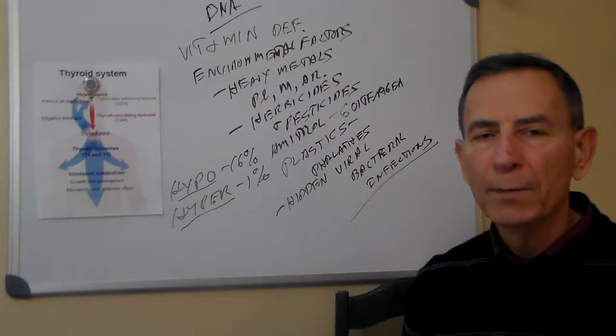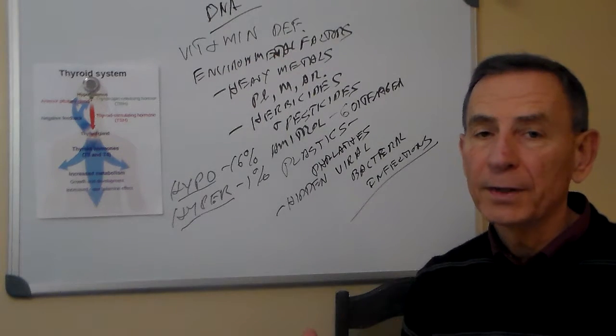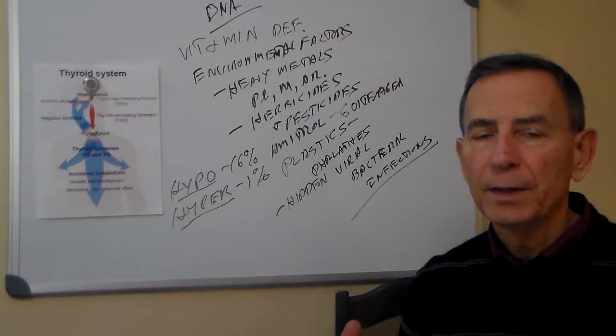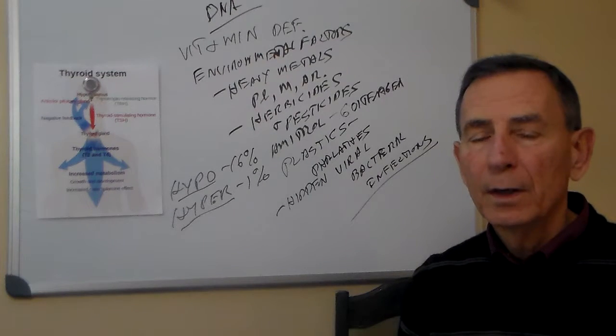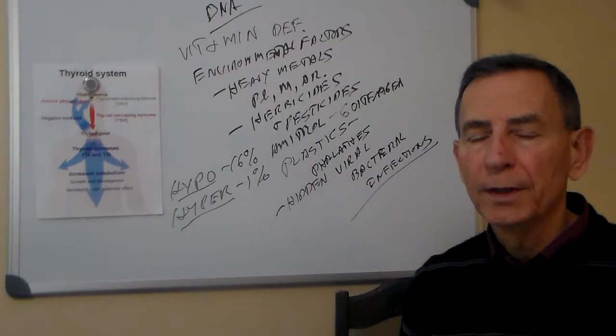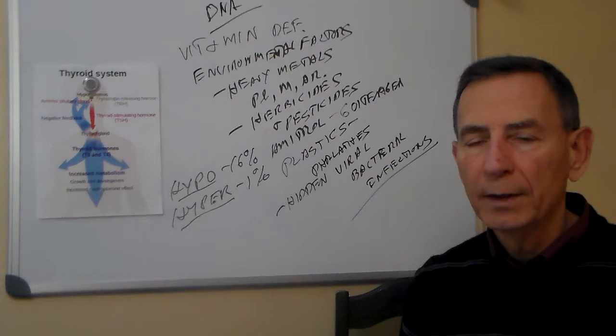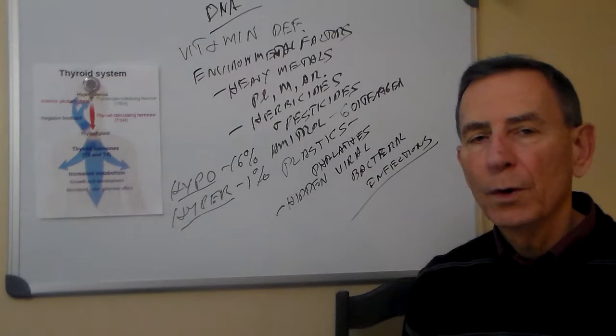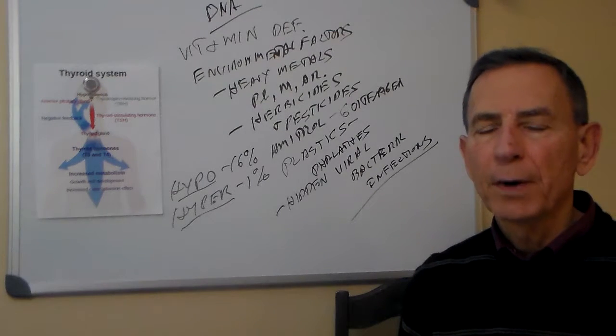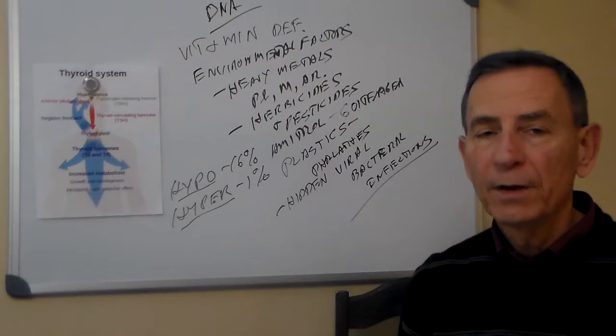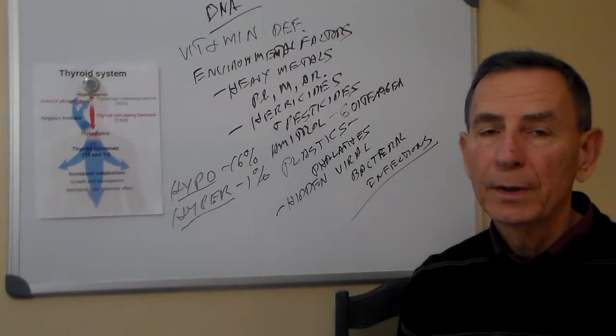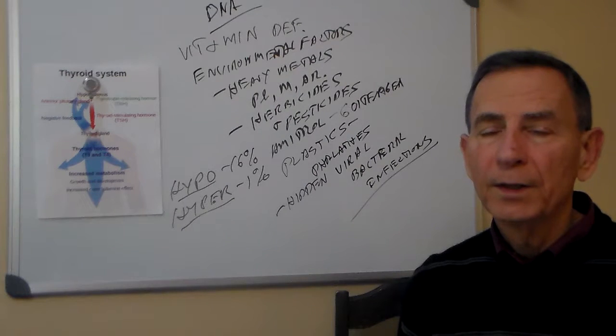So tofu, soy milk, soy hot dogs or hamburgers, a lot of these vegetarian alternatives are made with soy protein. Food bars, those types of bars can have soy in them. So you want to avoid soy. You want to avoid eating processed foods as much as possible because of all the additives, coloring agents, flavoring agents, fillers, thickeners, stabilizers, high fructose corn syrup, MSG. None of these things are good for us anyhow. And they're certainly not good for the thyroid.